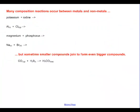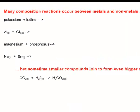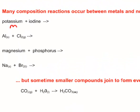Some composition reactions occur between metals and non-metals. So here is potassium which is a metal and here's iodine which is a non-metal. It comes from the other side of the periodic table. Here's another one. Aluminum and chlorine. Aluminum is the metal. Chlorine is the non-metal.